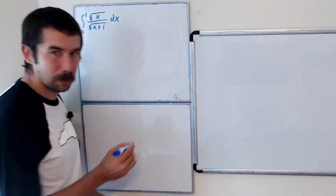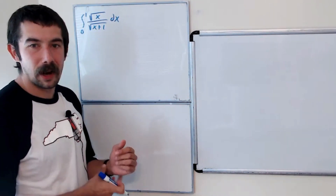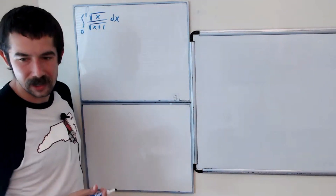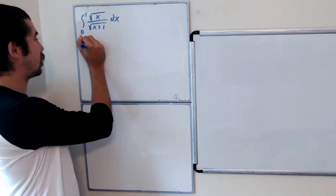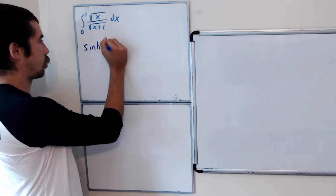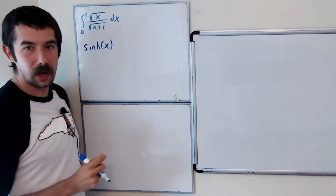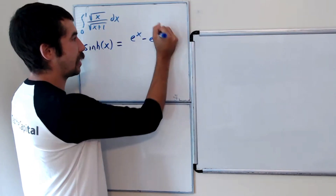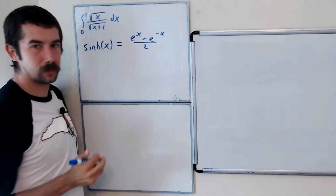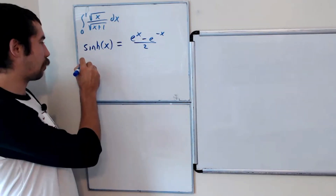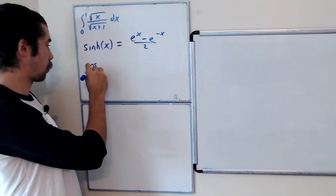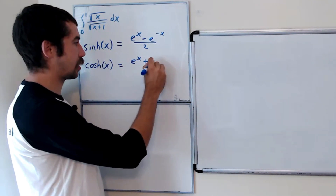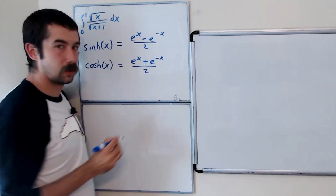Before we get to the problem, I want to introduce you to the hyperbolic trig functions. We're going to look at sinh of x, which is equal to (e^x minus e^(-x)) over 2, and the hyperbolic cosine function, cosh, which is equal to (e^x plus e^(-x)) over 2.